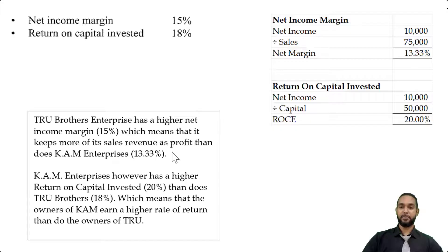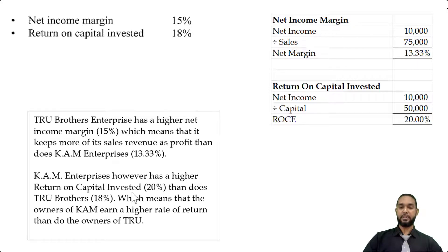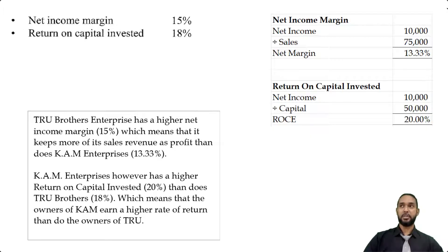Speaking of return on capital invested, for True Brothers it's 18%, whereas for KAM Enterprises it's 20% — using opening capital of 50,000 and not average capital of 55,000. KAM Enterprises has a higher return on capital invested of 20% than does True Brothers at 18%, which means the owners of KAM earn a higher rate of return on their invested capital. If you use the average capital figure of 18.18% for KAM, you would say they earn practically the same thing.